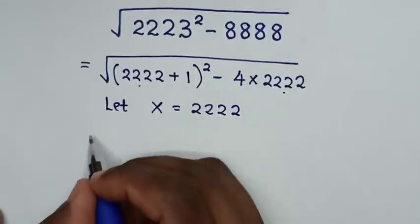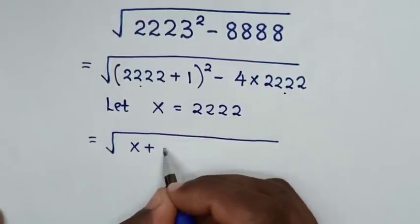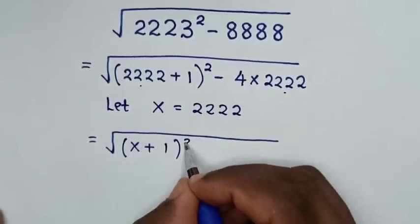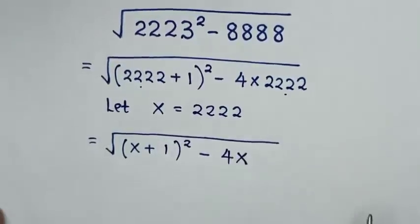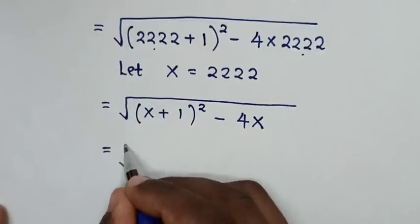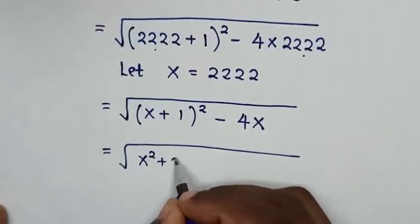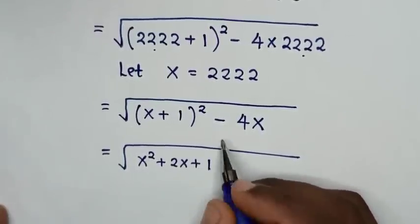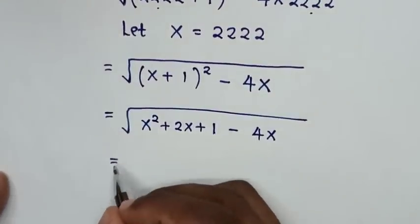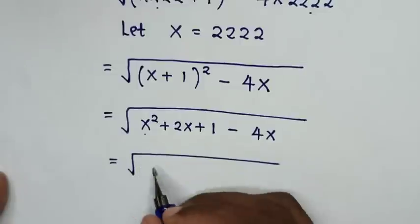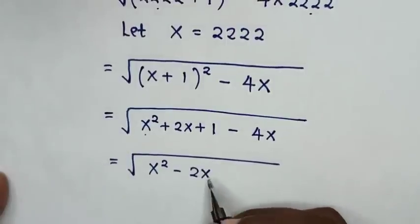Then, in the next step, the expression will be equal to square root of (x + 1) bracket squared, then minus 4 times x, so it will be 4x. Then, it will be equal to square root of x squared plus 2x plus 1, then minus 4x. Then, in the next step, it will be equal to square root of x squared, then 2x minus 4x is negative 2x, then plus 1.